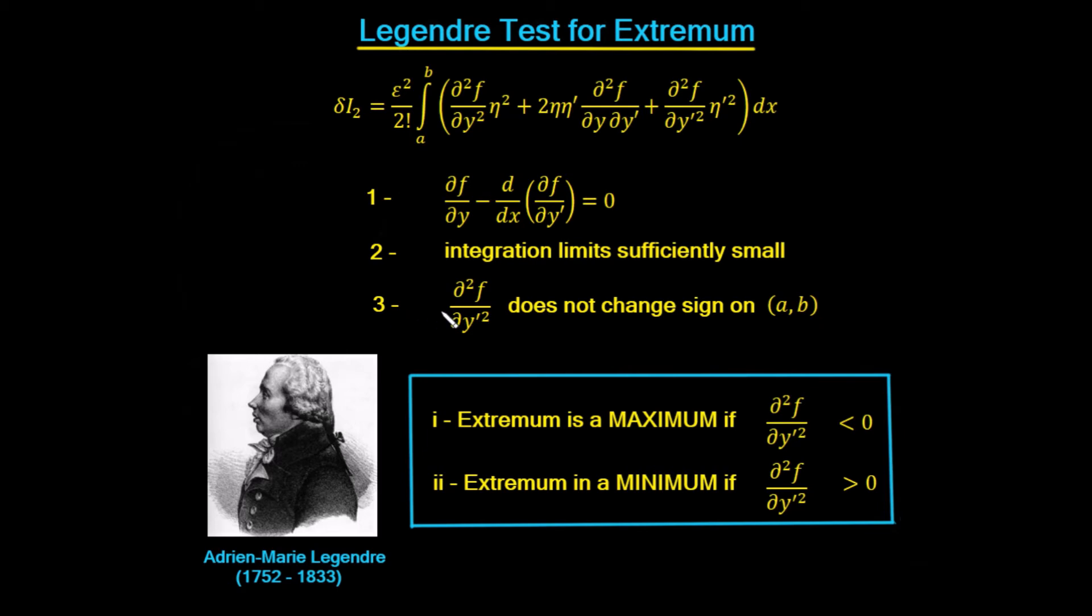Now if the partial squared f by partial y derivative squared does not change sign over the interval (a,b), so that's something that must be satisfied.